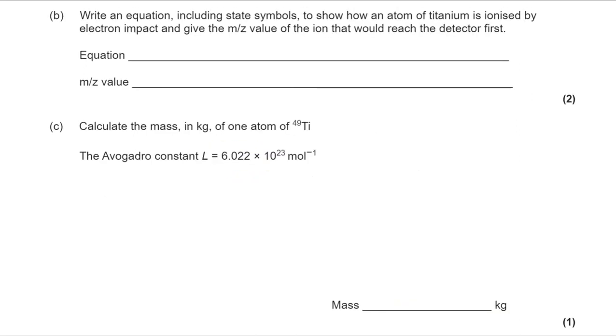We want the equation for the ionization of titanium. So we have titanium atoms becoming titanium ions, and that happens by losing electrons. Remember, in electron impact, you fire high energy electrons at your sample, but they knock electrons off your sample. So the ions will always be positive, and they will usually be plus one.